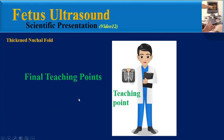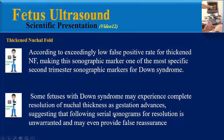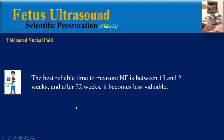Please pay attention to these final teaching points. Due to the exceedingly low false positive rate for nuchal fold, this sonographic marker is one of the most specific second trimester markers for Down syndrome. Some fetuses with Down syndrome may experience complete resolution of nuchal thickness as gestation advances, suggesting that following serial sonograms for resolution is unwarranted and may even provide false reassurance. The best reliable time to measure nuchal fold is between 15 and 21 weeks of gestation; after 22 weeks it becomes less valuable.